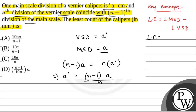So the least count is one main scale division minus one Vernier scale division. One main scale division is A centimeter and one Vernier scale division is A', so least count equals A minus A' centimeter.